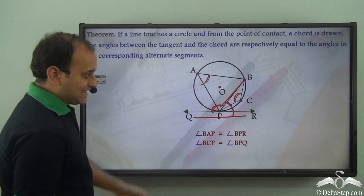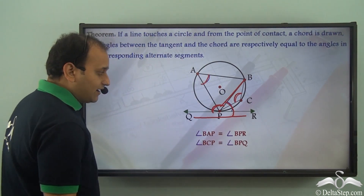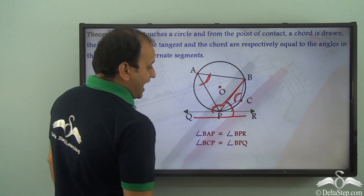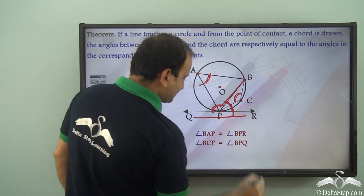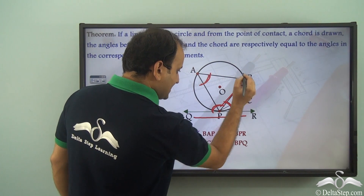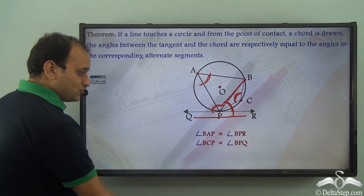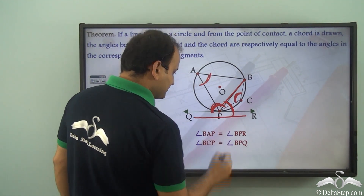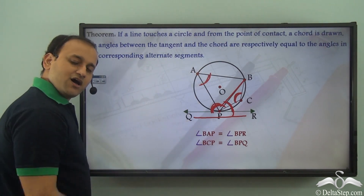So in this case, we can say that angle BAP is equal to angle BPR. This angle BAP is equal to angle BPR. And angle BCP is equal to angle BPQ — the angle made by the tangent with the chord.